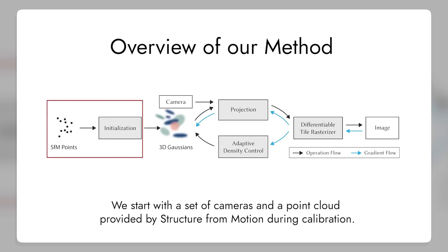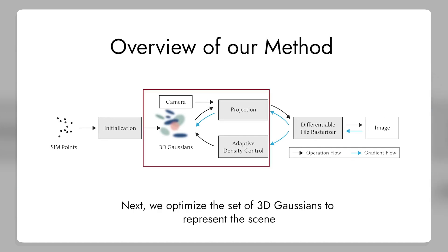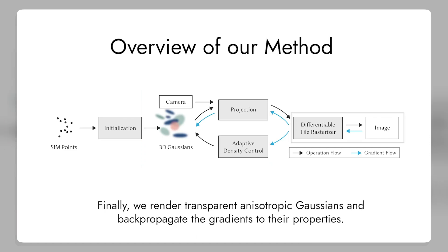This way, they can reduce the number of 3D Gaussians without losing much visual quality. By using this interleaved optimization and density control algorithm, they can obtain a compact and accurate representation of the scene with only tens of thousands of 3D Gaussians.